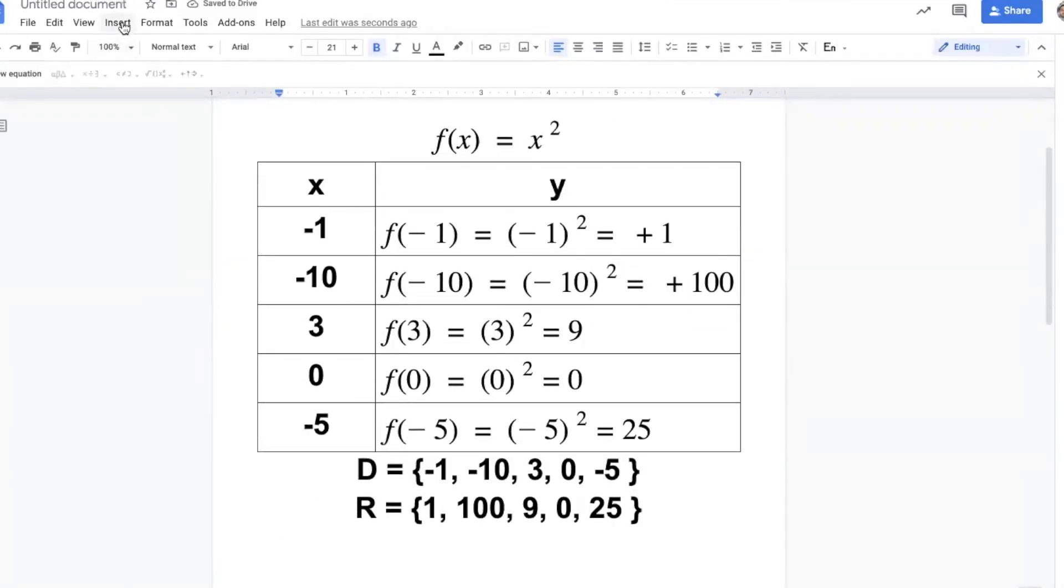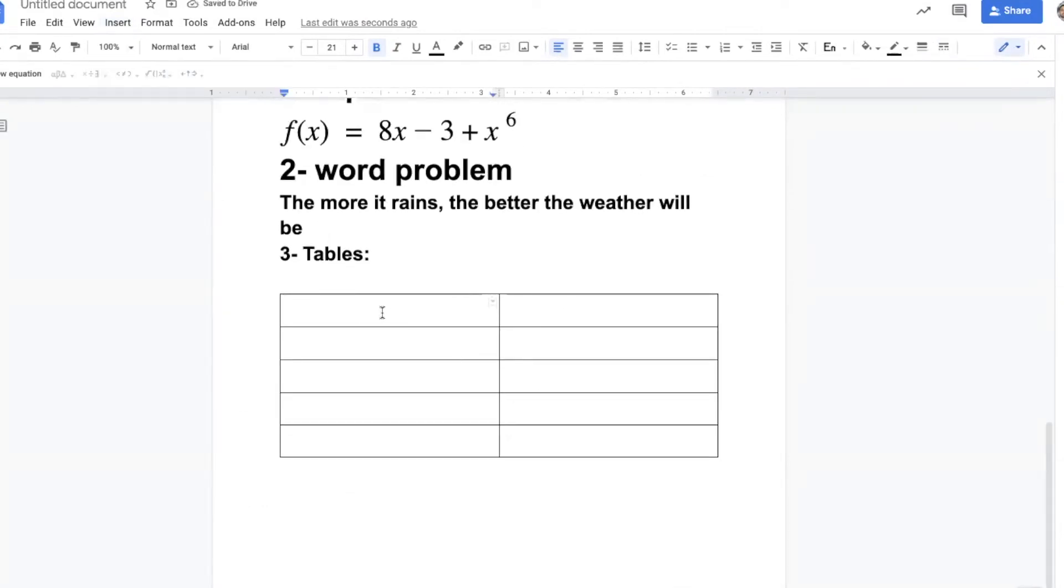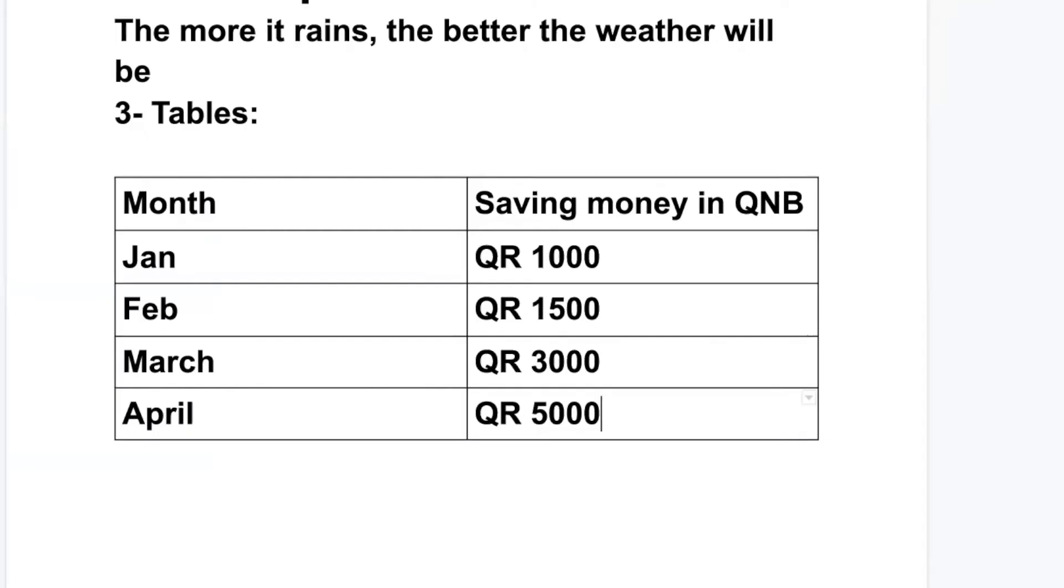This is a function represented as a table. In January I had 1000 riyals in the bank, in February I had 1500 in the bank, in March I had 3000, in April I had 5000. What do you think this is? A relationship between two things. What are they?